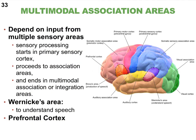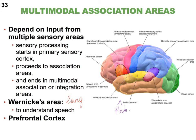Some association areas are quite complex and are put in their own class of multimodal association areas — these collect information from several primary sensory cortical areas. Wernicke's area is located right next door to the primary auditory cortex and is also partially in the parietal lobe. Wernicke's area is another language area, and together with Broca's area it belongs to the language areas, typically found in the left cerebral hemisphere.